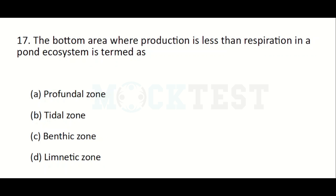The bottom area where production is less than respiration in a pond ecosystem is termed as: Option A: profundal zone. Option B: tidal zone. Option C: benthic zone. Option D: limnetic zone. The answer is Option A, profundal zone.